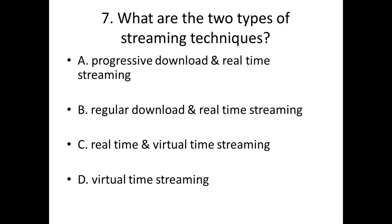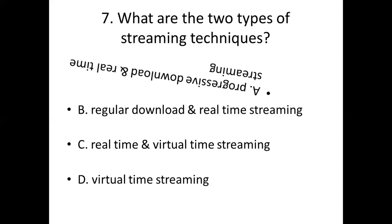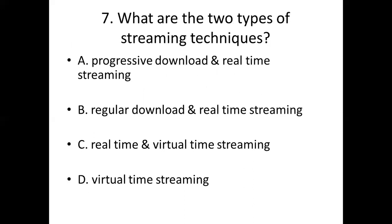Question 7: What are the two types of streaming techniques? Option A: progressive download and real-time streaming. Option B: regular download and real-time streaming. Option C: real-time and virtual-time streaming. Option D: virtual-time streaming. Answer: Option A, progressive download and real-time streaming.